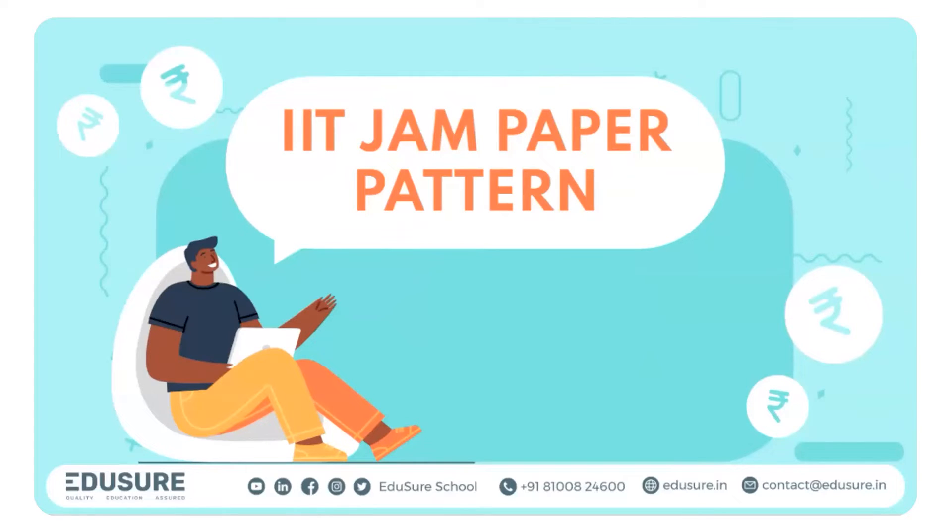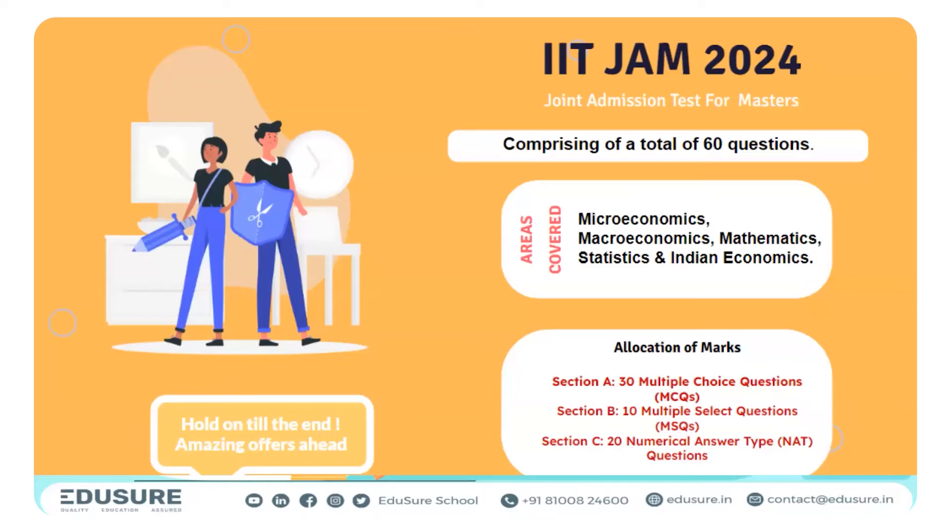We begin our session by analyzing the IIT JAM paper pattern. The paper consists of approximately 60 questions covering micro, macro, math, statistics, and Indian economics.